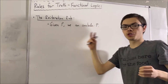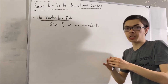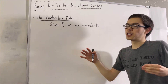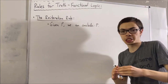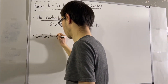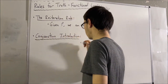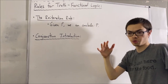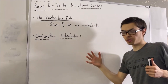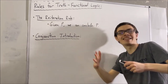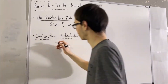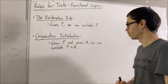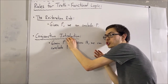The next two rules we're going to talk about are rules involving conjunctions — that is, when we have two statements that are both true. We have conjunction introduction and conjunction elimination. For conjunction introduction, the way it works is, if we're given a statement P is true and we're also given a statement Q is true, we can conclude that P and Q is true. We've introduced the conjunction.